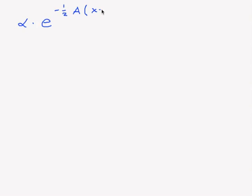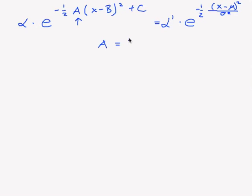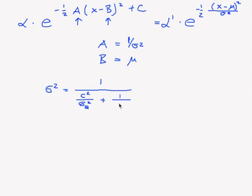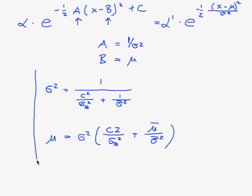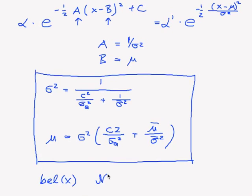Now we're essentially done. Our representation is λ times e raised to minus one half times a(x − b)² plus some c, and this should equal some α times e raised to minus one half times (x − μ)² / σ². Therefore a = 1 / σ² and b = μ. Using the formulas from the previous slide, our new posterior σ² = 1 / (c² / σ_q² + 1 / σ overline²), and our new μ = σ² times (c times the measurement c) / σ_q² plus μ overline / σ overline²). This is what we initially wanted: the belief of x is a normal distribution with these μ and σ².